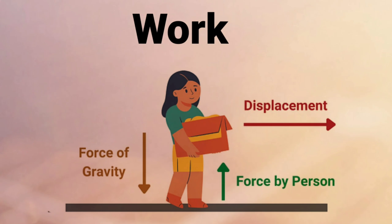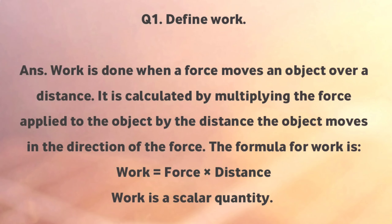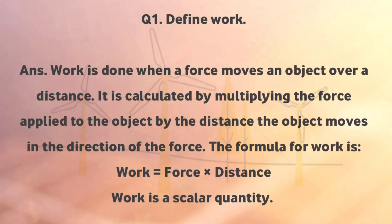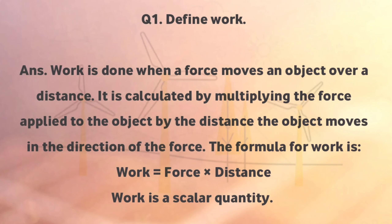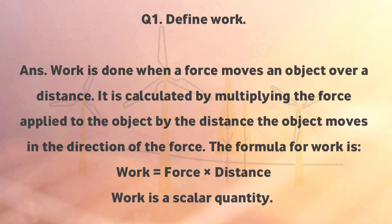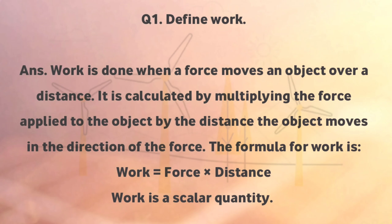Define work. Work is done when a force moves an object over a distance. It is calculated by multiplying the force applied to the object by the distance the object moves in the direction of the force. The formula for work is: Work equals force into distance. Work is a scalar quantity.